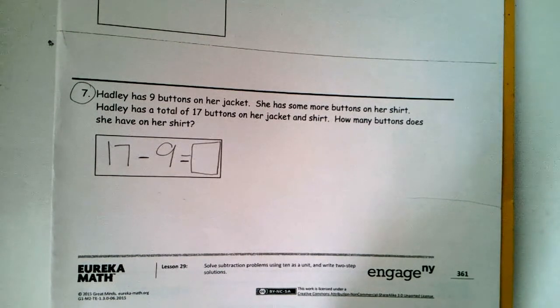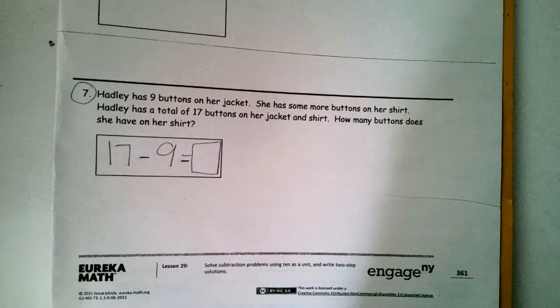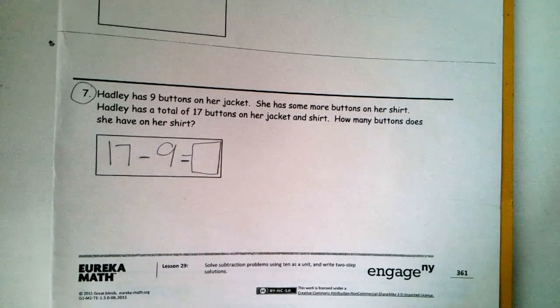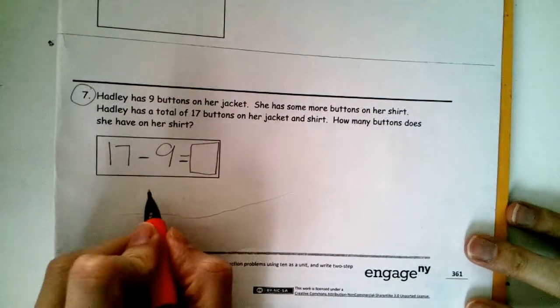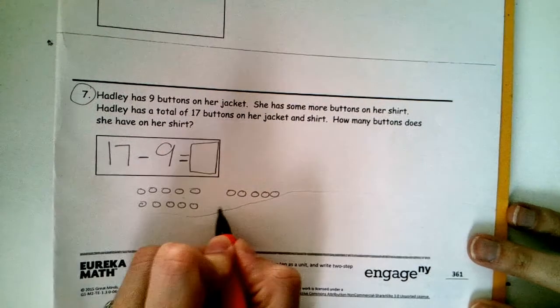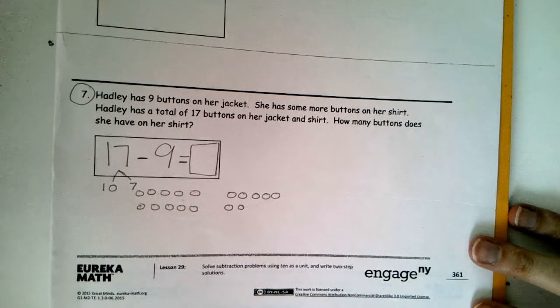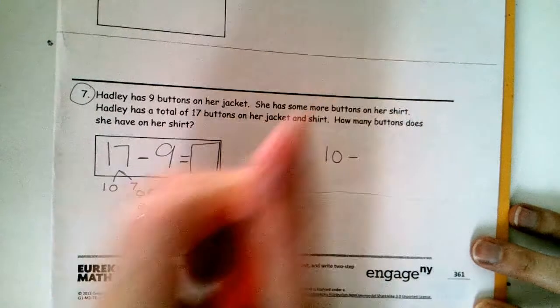Now it's your turn. Work independently again, that means on your own, to use a strategy to show how you would solve 17 take away 9. There's the picture strategy, or you may use the take from 10 strategy. You started with your picture strategy. We should always draw that whole number first. Our whole number is 17. So, I need 10 and 7 more.